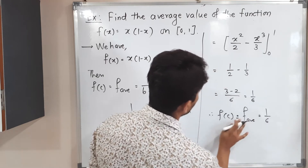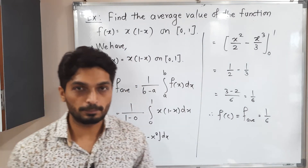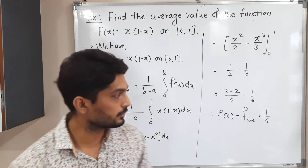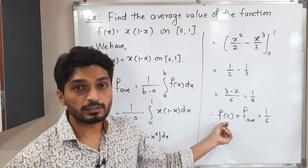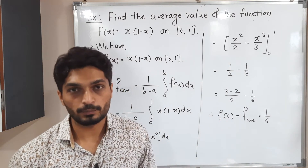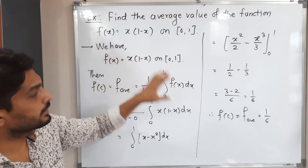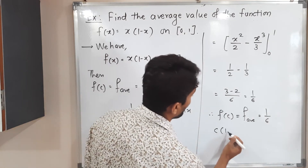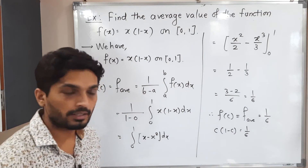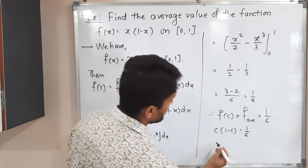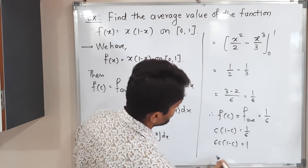So therefore f(c), the average value, is equal to 1 by 6. We are also interested to know the value of c where the function gets its average value. Since f(x) = x(1 minus x), we have f(c) = c(1 minus c) equal to 1 by 6.